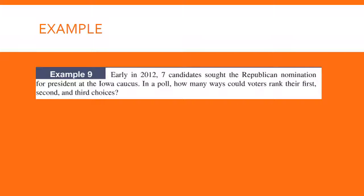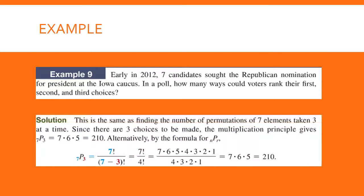Try this example: in early 2012, seven candidates sought the Republican nomination for president at the Iowa caucus. In a poll, how many ways could voters rank their first, second, and third choices? This is finding the number of permutations of seven elements taken three at a time: seven factorial over (seven minus three) factorial, which is seven factorial over four factorial. The four factorial cancels, leaving seven times six times five, which is 210.